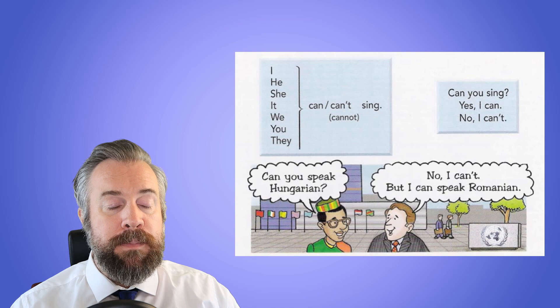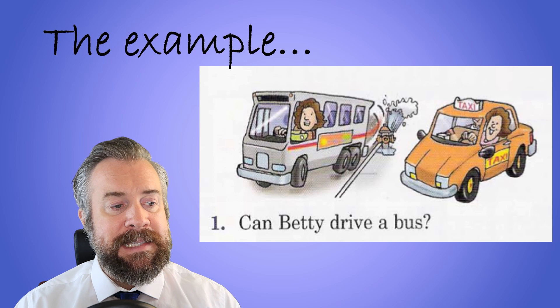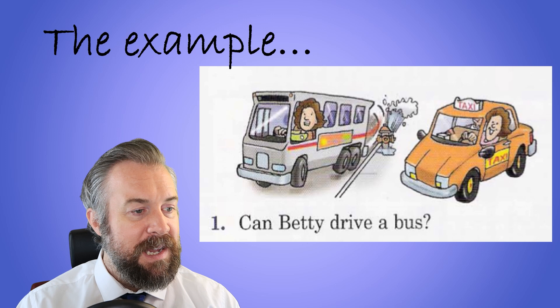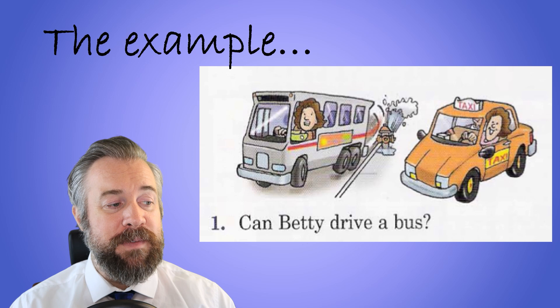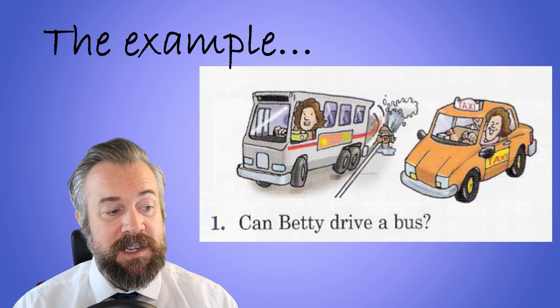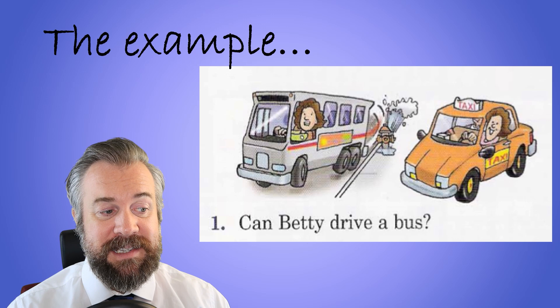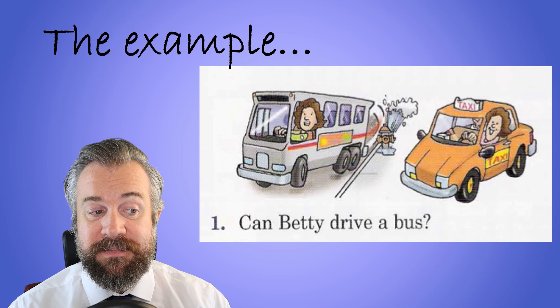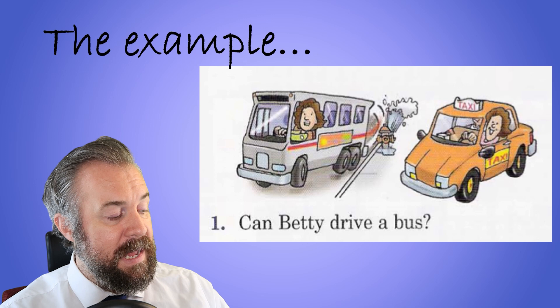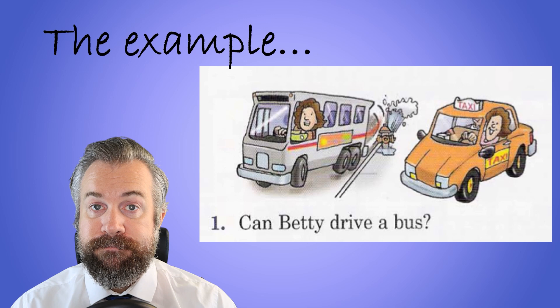Let's look at some examples of what people can and can't do. Here we have Betty — Betty is in a bus and Betty is in a taxi. In one of them she looks much more comfortable. Can Betty drive a bus? Looking at the picture, no she can't, but she can drive a taxi.